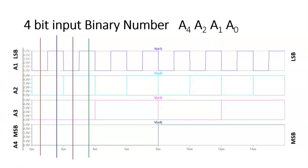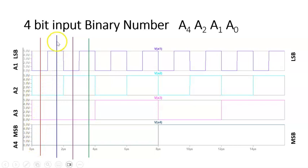The four input numbers: A1 is the LSB and A4 is the most significant bit. A1 has a 2 microsecond pulse and A2 is 4 microsecond. At any point in time you can read the combination of the 4 inputs. For example, at this point it is 0, 0, 0, 0. Then next it is 0, 0, 0, 1. Then 0, 0, 1, 0, which is 2. Then 0, 0, 1, 1, which is 3. And so on up to the last combination 1, 1, 1, 1. This means all 16 combinations from 0000 to 1111 are being applied as inputs.